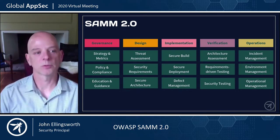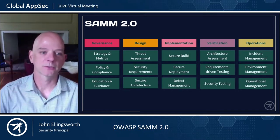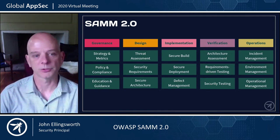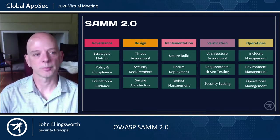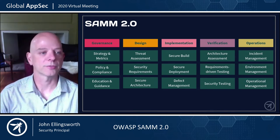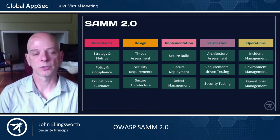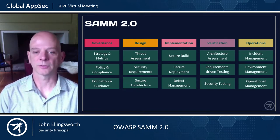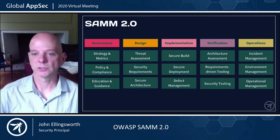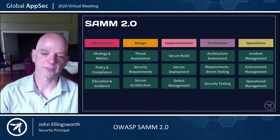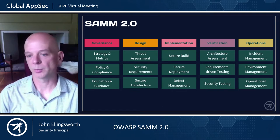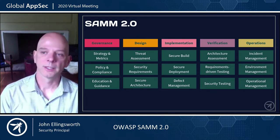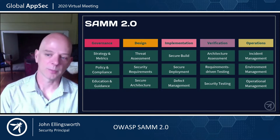Within governance, we have strategy and metrics, policy and compliance, and education and guidance — areas that leadership tends to be most interested in. Design is a critical phase covering threat assessment, security requirements, and security architecture. Implementation consists of secure builds, secure deployment, and defect management. Verification includes architecture assessment, requirements-driven testing, and security testing — where pen testing and DAST or SAST tools may be used to validate development practices. And then operations covers incident management, environment management, and operational management.